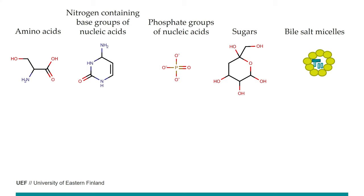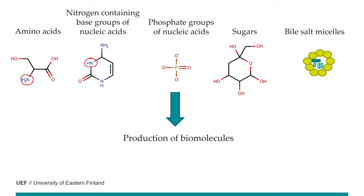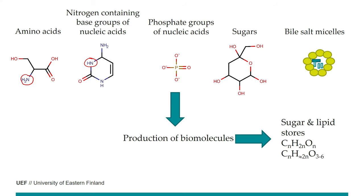Let's look at what we can get from different kinds of food. In food we have carbon, hydrogen, oxygen, and nitrogen. Nitrogen is found in amino acids and nucleic acids, and from these we produce our biomolecules. In some cases we can store energy in sugars or lipids, but when we break down proteins or nucleic acids for energy metabolism, we produce nitrogen waste.